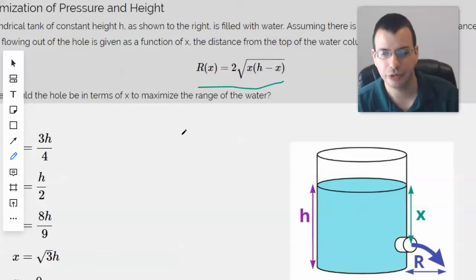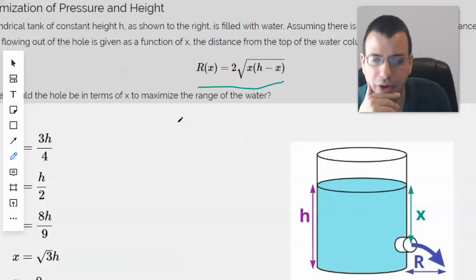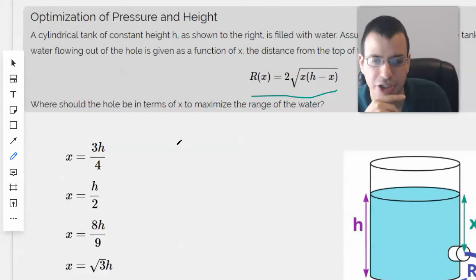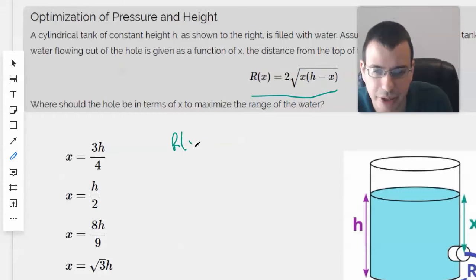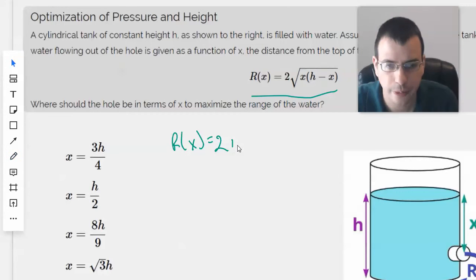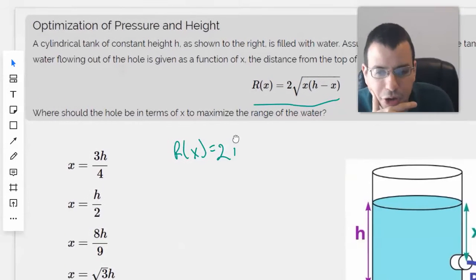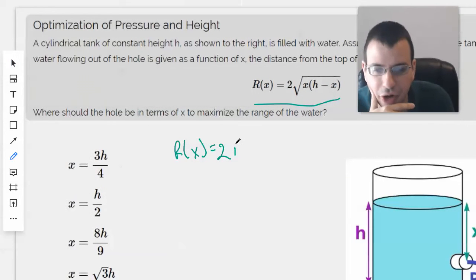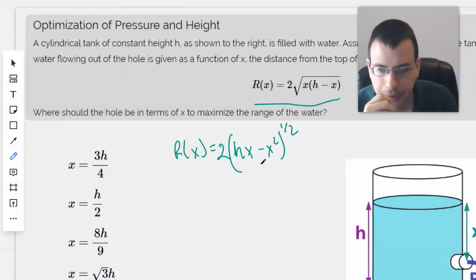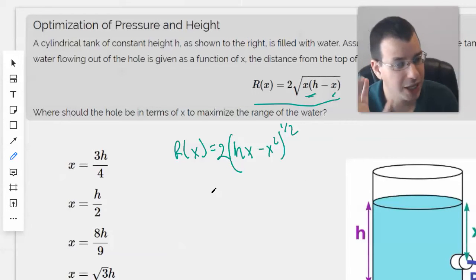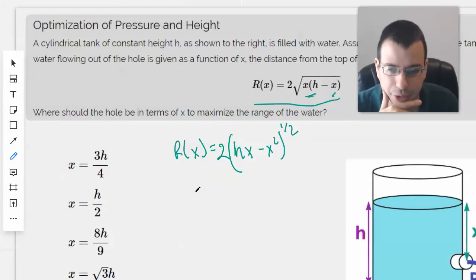We'll kind of see where this goes. So, start by rewriting R(x) in a location that's slightly more convenient for me. I'm going to call this h times x minus x squared to the 1 half.